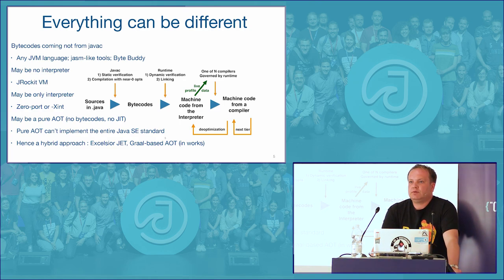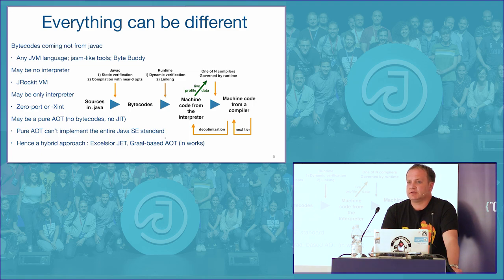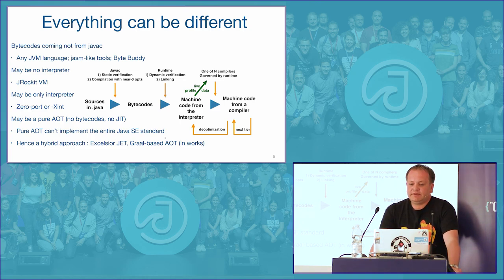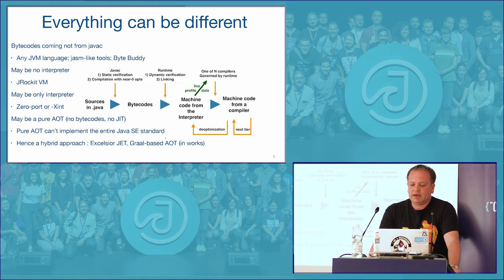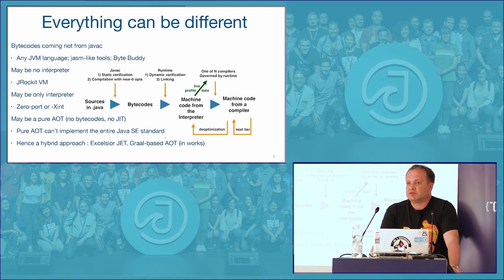Pure ahead-of-time compilation is strictly not possible due to features of the language itself. The fact that you can load a new class at any given moment — even constructing a URL on the fly to fetch a new class — shows that there is no whole-world state known to any given compiler. Therefore, whole-world compilation like C++ isn't quite possible. However, there are hybrid approaches. Java 9's ahead-of-time compiler compiles parts of code in advance to accelerate startup, and when new or redefined classes appear, it transfers to JIT compilation.